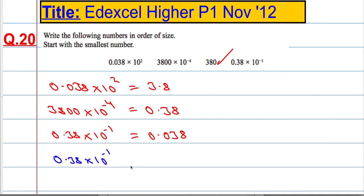Then the next smallest is 3800 × 10⁻⁴, then we've got 0.038 × 10², and then finally 380.